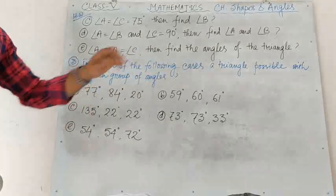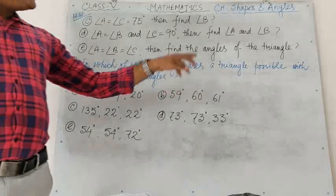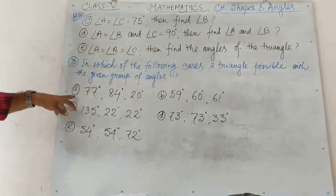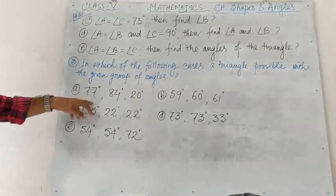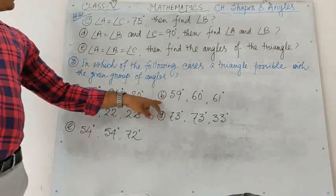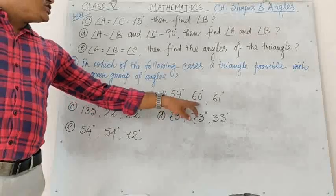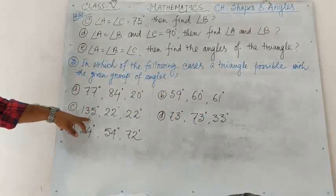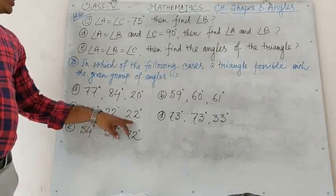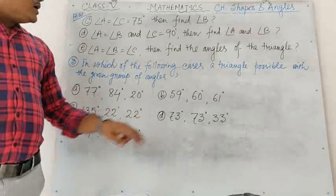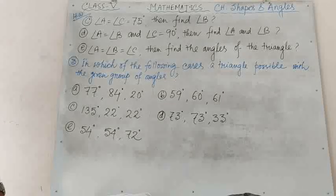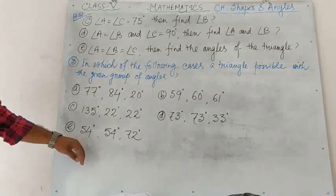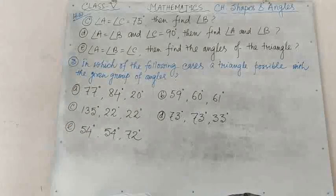Number 3: In which of the following cases is a triangle possible with the given angles? (A) 77°, 84°, 20°; (B) 59°, 60°, 61°; (C) 135°, 22°, 22°; (D) 73°, 73°, 33°; (E) 54°, 54°, 72°.